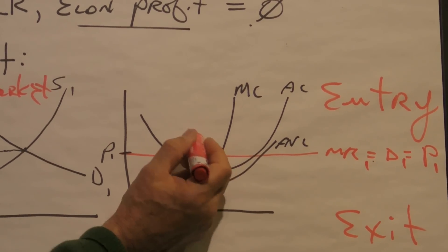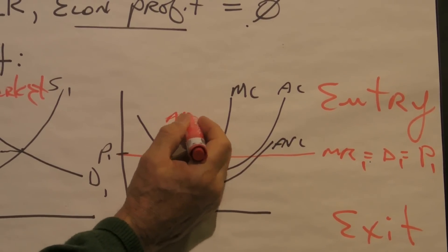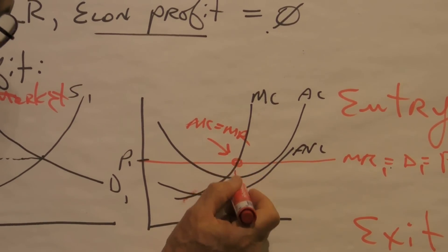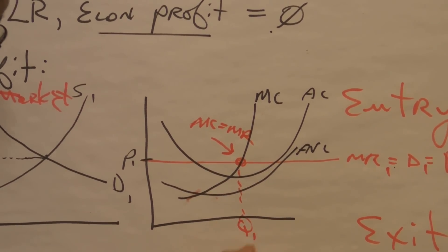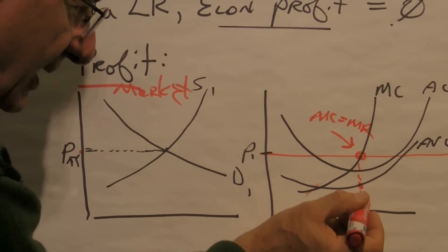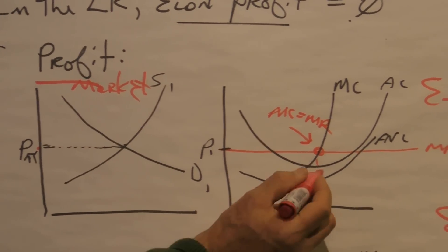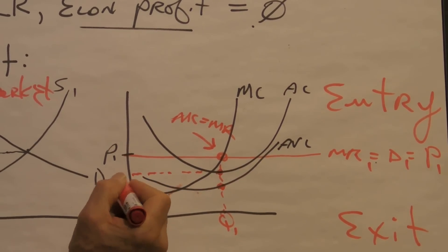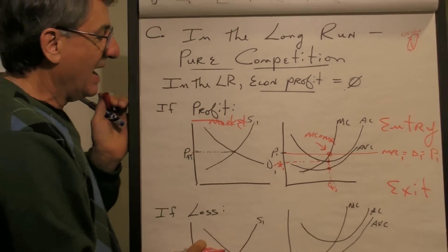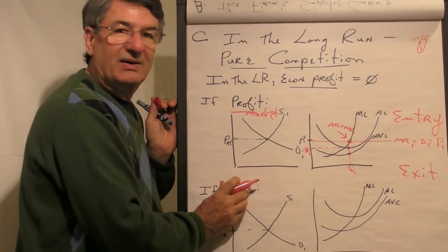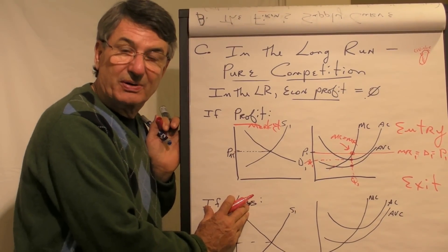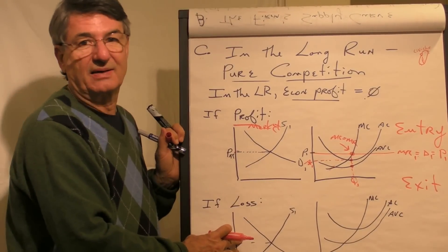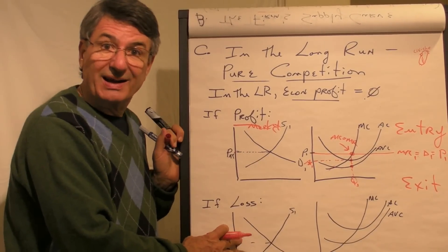Now the firm will produce where MC equals MR, of course, and that will be the quantity, Q1. And as we start up from Q1 up right there, look at that point—that's the average variable cost. And more importantly, this is the average cost of producing that quantity. And look, the price is greater than the average cost. Well, the formula for profit per unit is price minus average cost, so in this case that number is positive. The firm is making a profit in the short run.